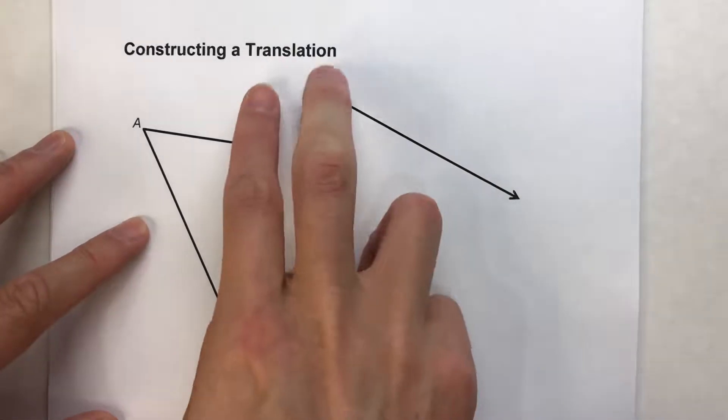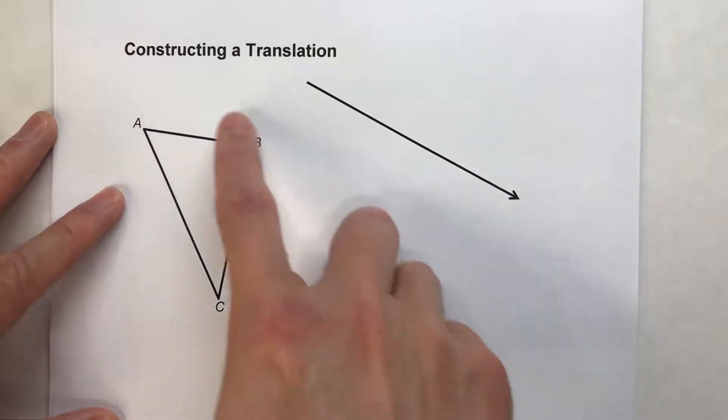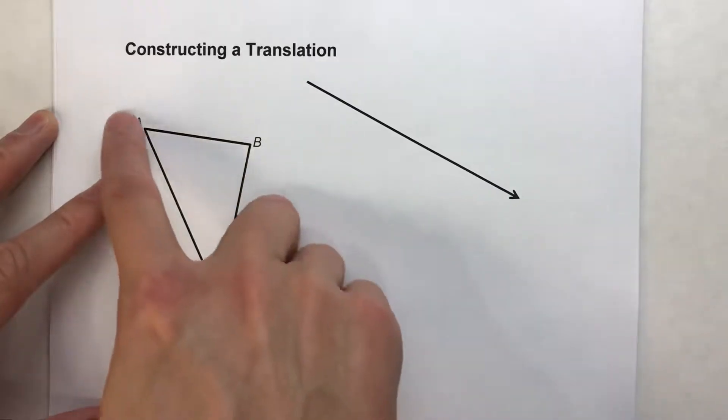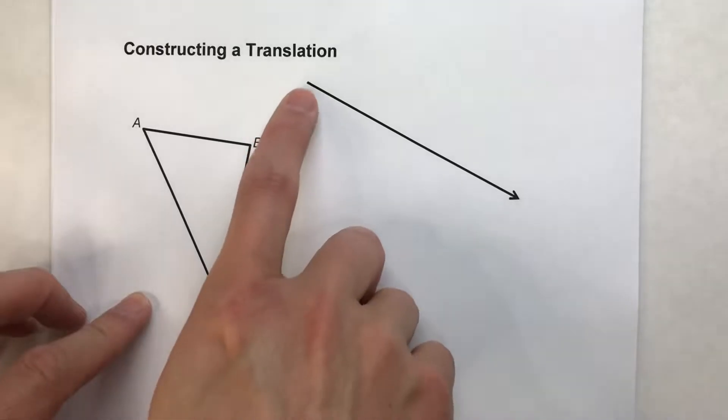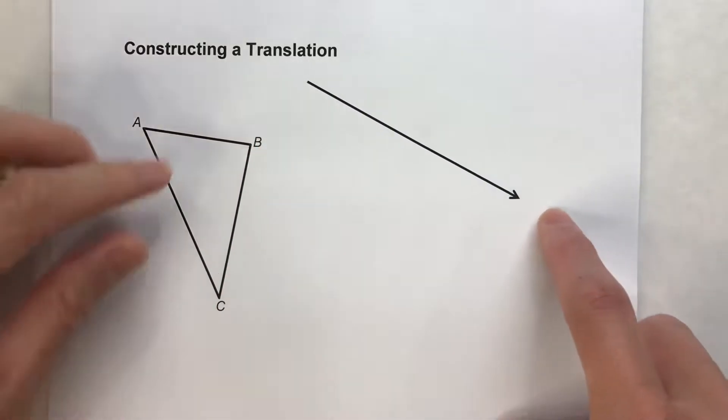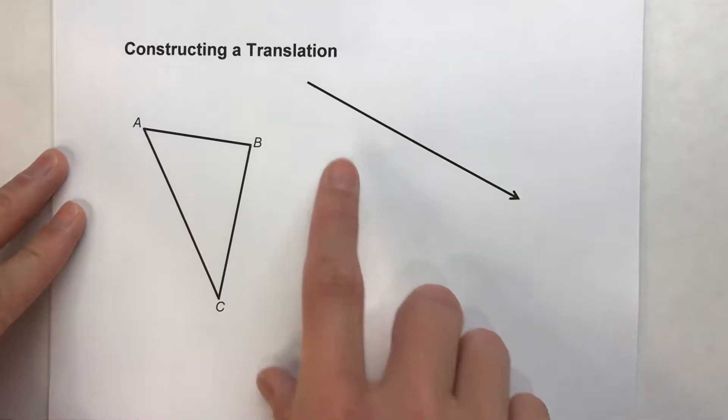A translation is basically when you take a figure and we slide it over. So here's the figure we have, triangle ABC, and this arrow right here, this is a vector, and the vector tells you the distance that we're going to slide it, because that's the length of the arrow, and the direction that we're going to slide the figure.